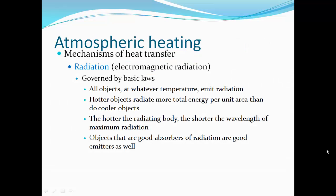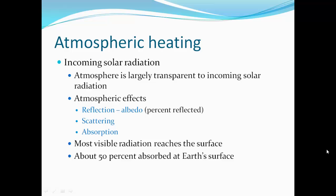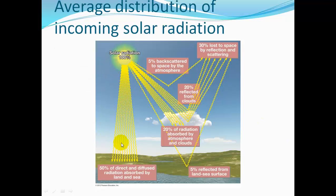Radiation is governed by basic laws: all objects at any temperature emit radiation. Hotter objects radiate more total energy per unit area than cooler objects. The hotter the radiating body, the shorter the wavelength of maximum radiation. Objects that are good absorbers of radiation are also good emitters. Incoming solar radiation: the atmosphere is largely transparent to it. Atmospheric effects include reflection or albedo — how reflective a surface is, the percent reflected — plus scattering and absorption. About 50% of direct radiation is absorbed at Earth's surface; about 5% is backscattered by the atmosphere; 20% is absorbed by atmosphere and clouds; 5% is reflected from the land and sea surface; and 20% is reflected from clouds, so 30% is lost to space by reflection and scattering.